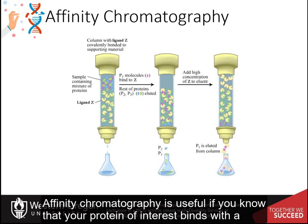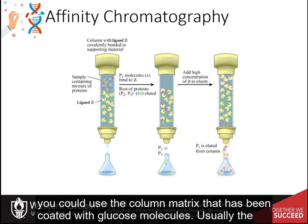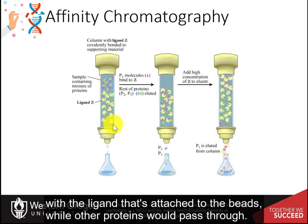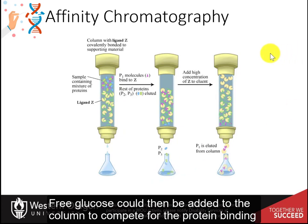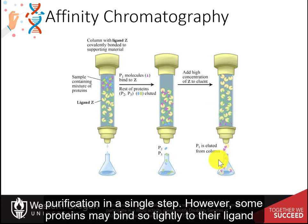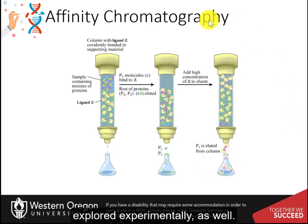Affinity chromatography is useful if you know that your protein of interest binds with a specific small molecule or ligand. For example, if your protein binds glucose, you could use a column matrix coated with glucose molecules. The small molecule or ligand is cross-linked covalently to the beads, and your protein of interest binds specifically to it while other proteins pass through. Free glucose can then be added to compete for the protein binding, causing it to elute. Affinity chromatography can yield high protein purification in a single step; however, some proteins may bind so tightly to their ligand that they cannot effectively be eluted.